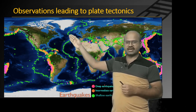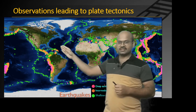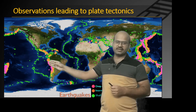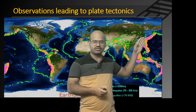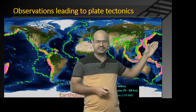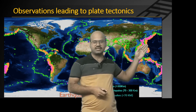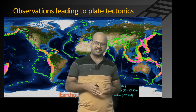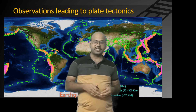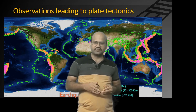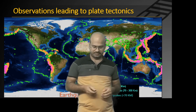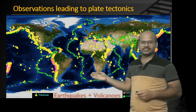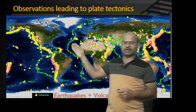You can see here that at the mid-oceanic ridge there are shallow earthquakes, while at the trenches there are intermediate and deep earthquakes. Because of the co-location of these things, geologists believed that there must be something occurring beneath the earth which is giving rise to earthquakes.